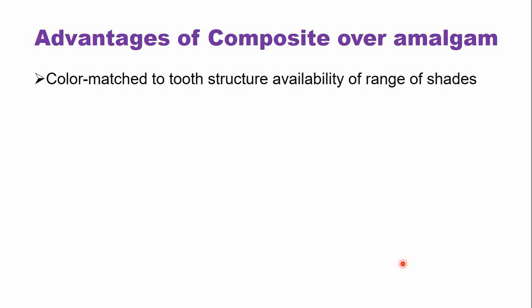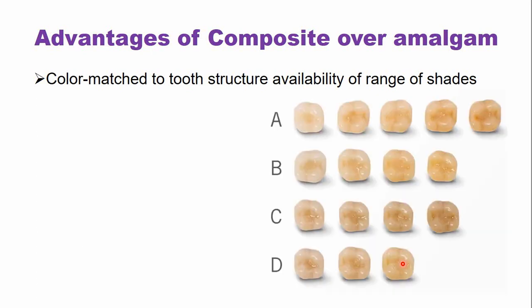In case of dental composites, there is good color match to the tooth structure because of the availability of a range of shades. You can see the number of shades that are available for dental composites, while silver fillings are silver in color.